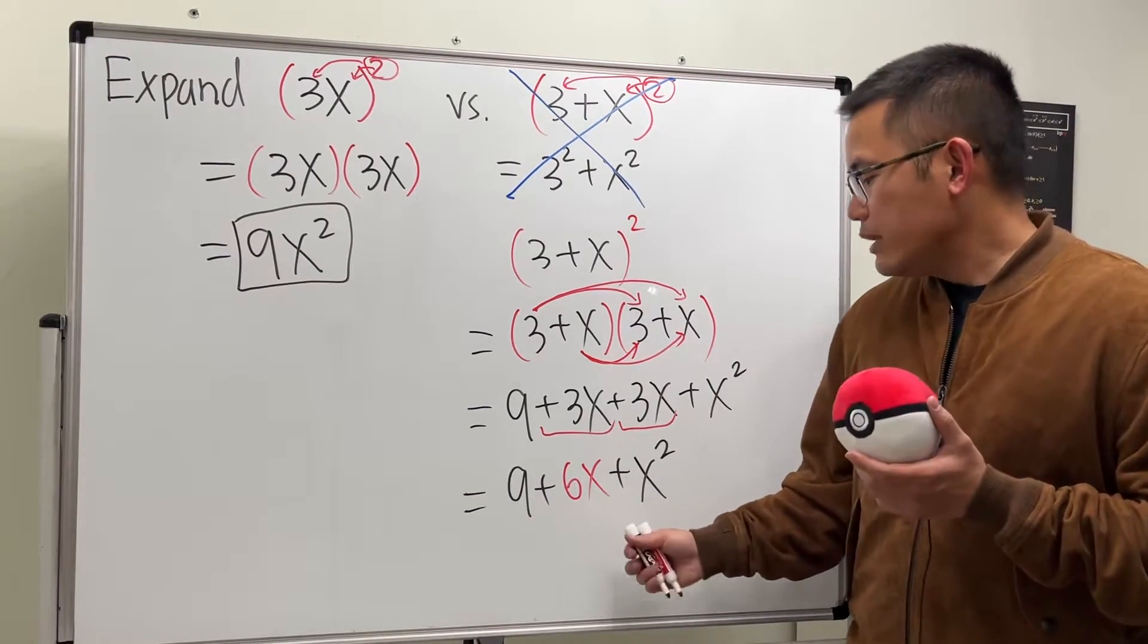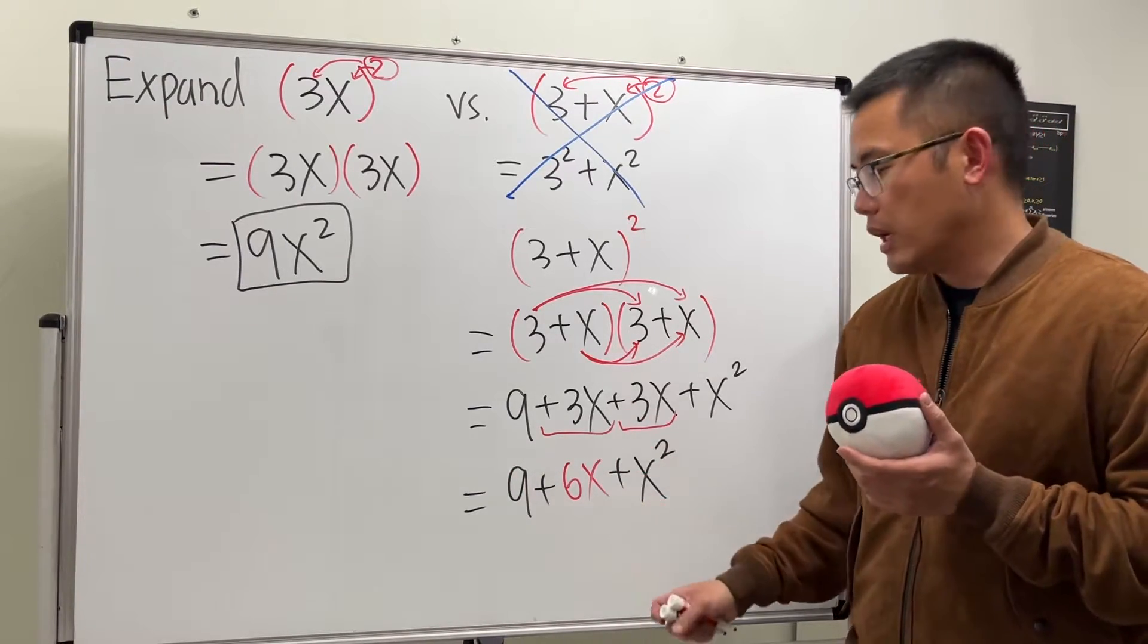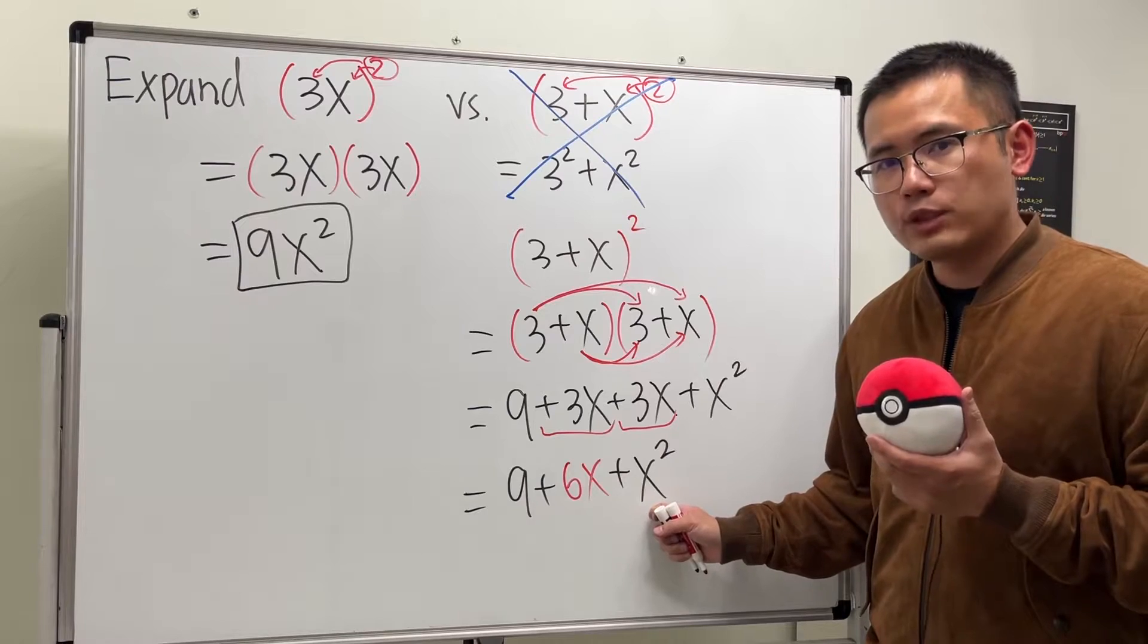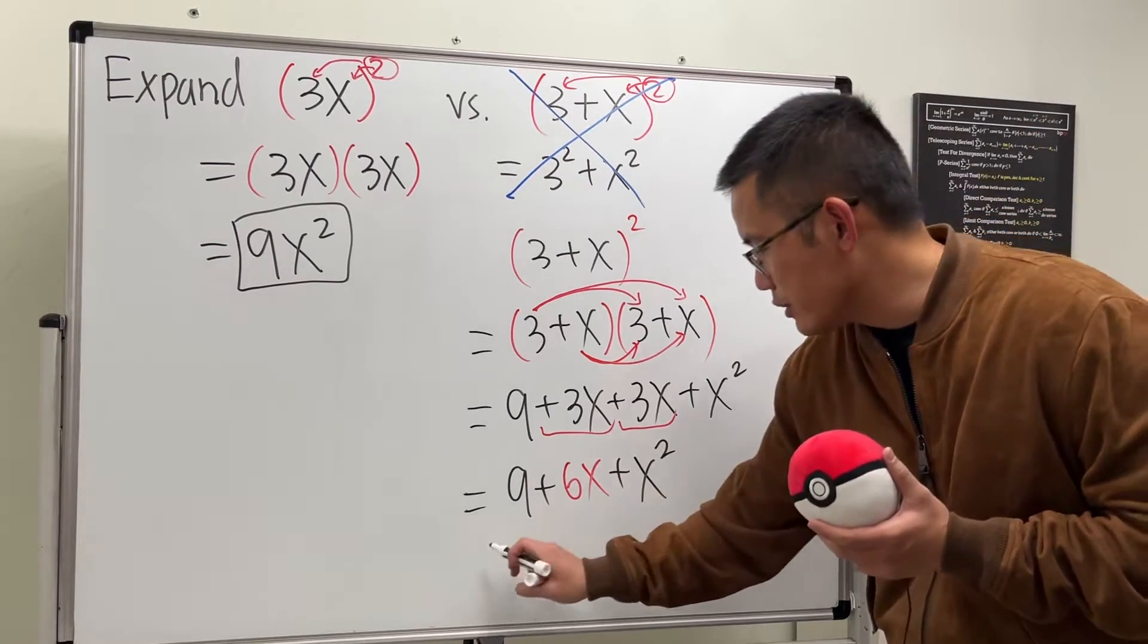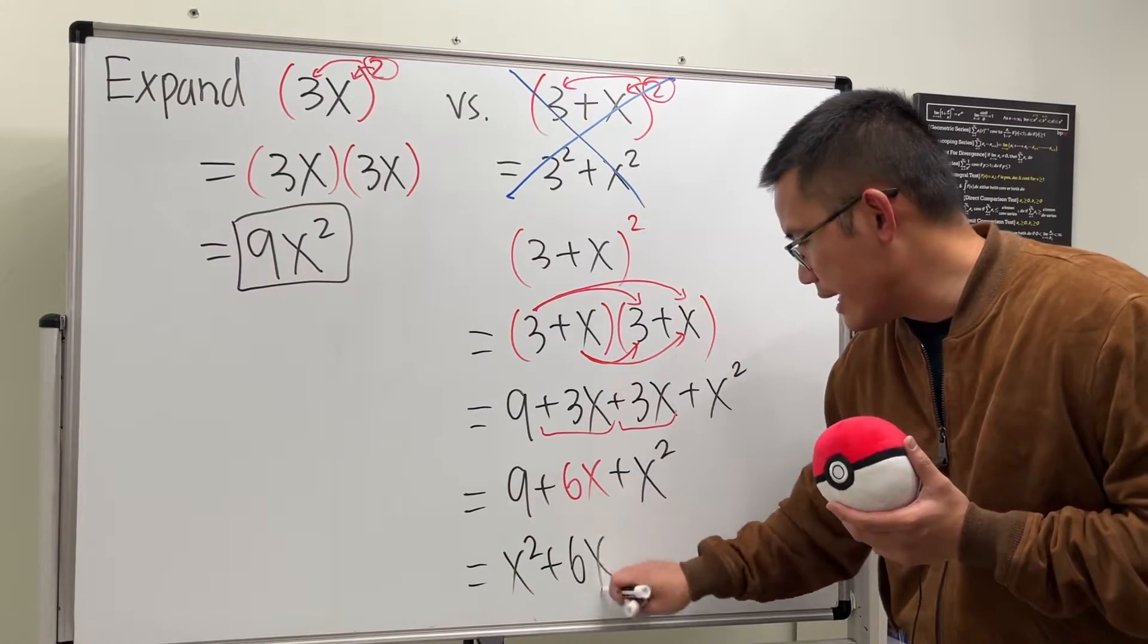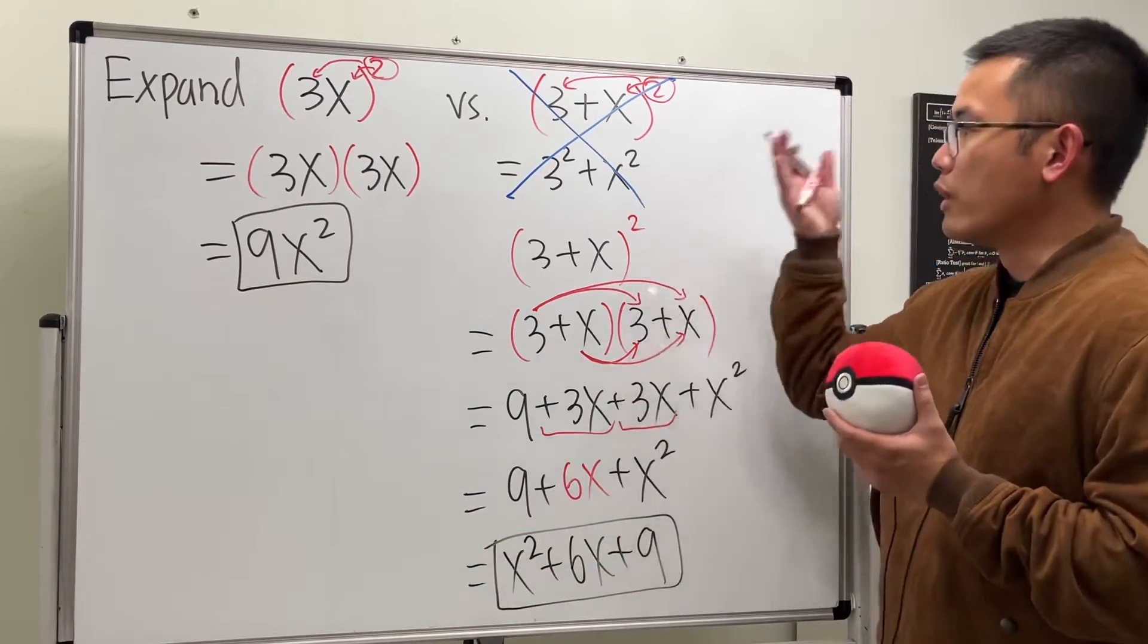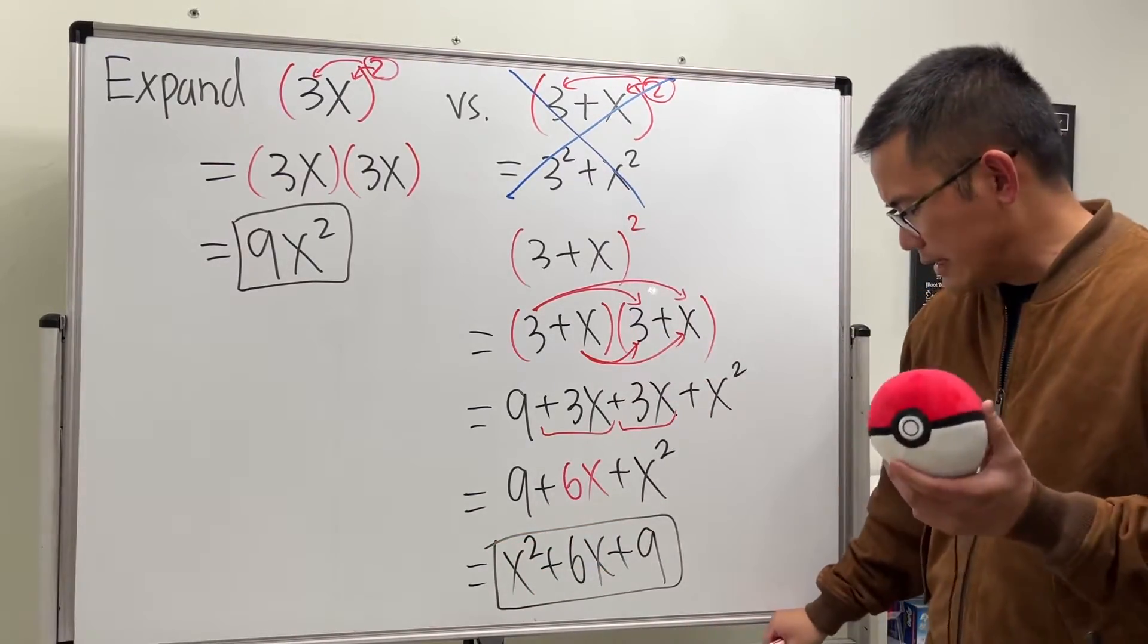Usually though, we like to have this answer in the descending order of the power, meaning that we want to write the x² term first. So let me just rewrite it as x² + 6x + 9. So this right here would be the answer for this one.